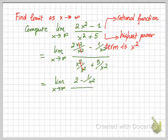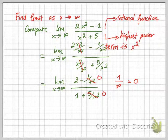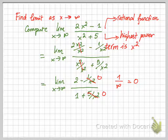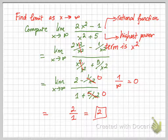After simplifying, this is the resulting function. Now you can plug infinity into x. In the limit context, a constant over infinity is zero. So plugging infinity in gives zero for those terms, and the limit of this function is 2 over 1, which equals 2 — where 2 is the leading coefficient of the numerator and 1 is the leading coefficient of the denominator.